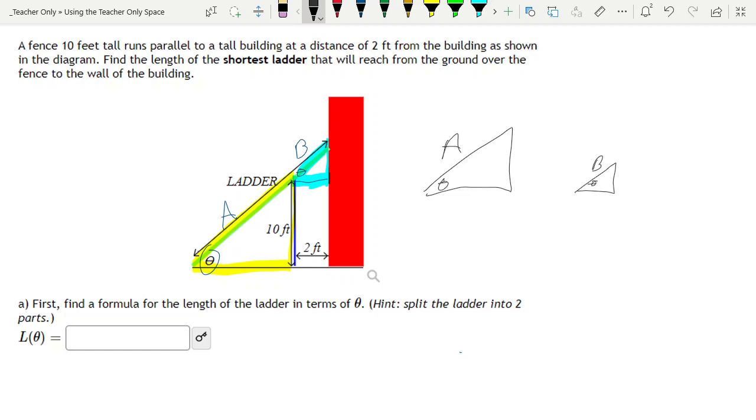So if I wanted the total length of the ladder, well, that would be A plus B, right? I take the yellow piece and the blue piece, add them together, giving me my total length. Now, the neat thing about this is we know the height of the yellow part of the triangle is 10, 10 feet.